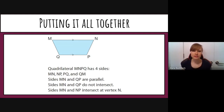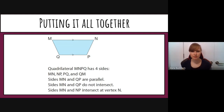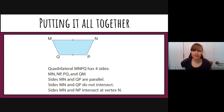Using a quadrilateral as an example, we can say that sides MN and QP are parallel, meaning they do not intersect. We can also say sides MN and NP intersect at vertex N. There are many more ways to describe a shape, but these are some of the key ones.